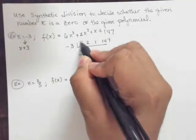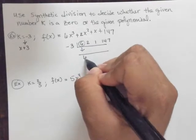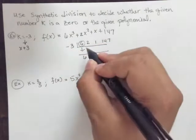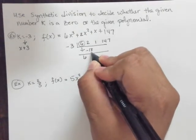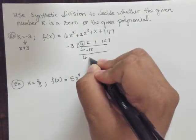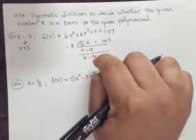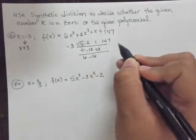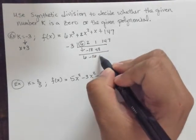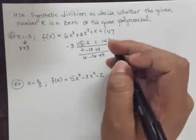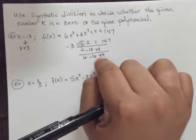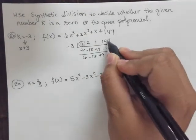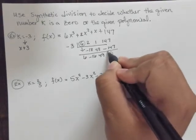And we're going to start, I'm going to circle this, I've got my 6. I've got negative 3 times 6, and I get negative 18 here. So I have 2 plus a negative 18, which gives me negative 16. And then negative 3 times a negative 16 gives me a positive 48. And 1 plus 48 happens to give me 49. And then I've got a negative 3 times 49, which is a negative 147. And 147 plus a negative 147 happens to be 0.